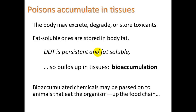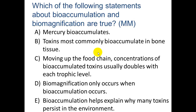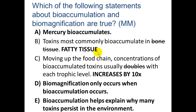Bioaccumulated chemicals may be passed on to animals that eat the organisms on up the food chain. Checking the statements: mercury does bioaccumulate — true. The concentration increases by a factor of 10x moving up the food chain, not double, based on the 90% heat loss idea where you eat roughly 10 times the organisms below you. Biomagnification only occurs when bioaccumulation occurs — true. Bioaccumulation helps explain why toxins persist in the environment — true, they persist inside living organisms.